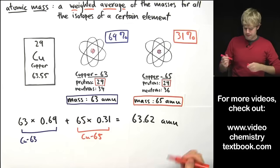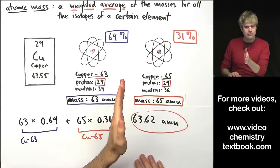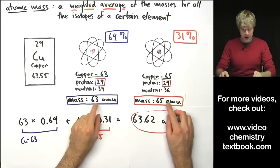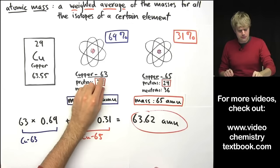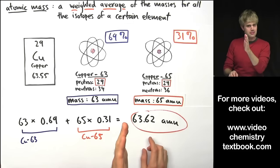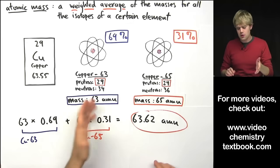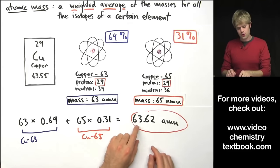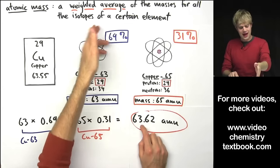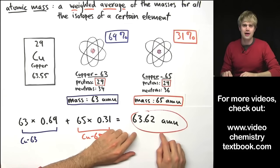Now look at this, 63 and 65. If we did a regular average, we would come up with a number that was right in the middle, 64. But there are a lot more of the 63s. So that's going to mean that our weighted average isn't going to be right in the middle. It's going to be closer to 63. And that's exactly what we see. We see a weighted average that is not 64 but is down closer to 63 because we have more of these and the heavier copper-65s, they're not contributing as much to this weighted average.